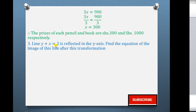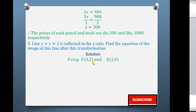Question 3: Line y + x = 2 is reflected in the y-axis. Find the equation of the image of this line after this transformation. Since the line is reflected in the y-axis, we will first represent this line on a graph then do the reflection along the y-axis. If x = 0, then y = 2; and if y = 0, then x = 2. So the two coordinates are (0, 2) and (2, 0), which guide us to draw the line y + x = 2.